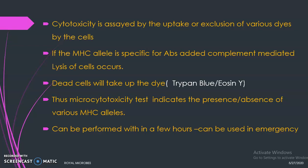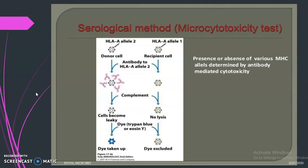In the diagrammatic representation, donor and recipient cells are shown with monoclonal antibody added. On incubation, if the antibody is specific it binds to the antigens forming an antigen-antibody complex. Complement is then added and binds to the complex, resulting in complement-mediated lysis. Dead cells take up the dye; if there is no lysis there is no dye uptake. This detects the presence or absence of various MHC alleles.